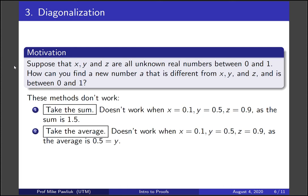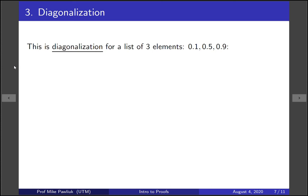Of course, they work sometimes, but we want a method that works all the time. The method that we're going to use is called Cantor's Diagonalization. It's named after a mathematician Cantor, and we've heard his name before. So before we get into the full power of diagonalization, let's look at an example of it for a list of three elements, 0.1, 0.5, and 0.9.